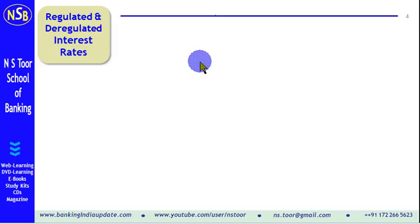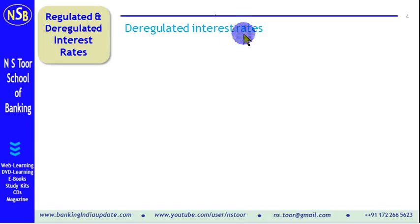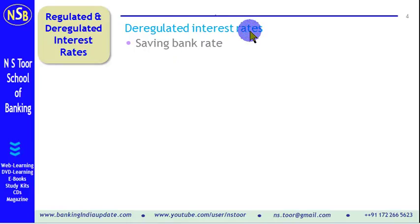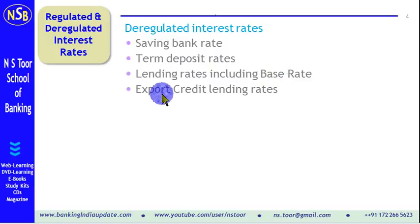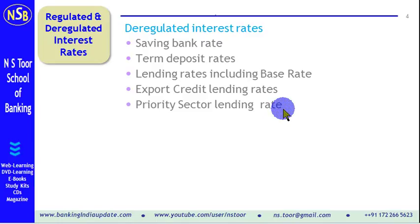Now, regulated interest rates versus deregulated interest rates: deregulated interest rates means the interest rates which banks themselves can fix, while regulated interest rate means they are fixed either by RBI or by the government. Regulated interest rates include saving bank rate, term deposit rates, lending rates including base rate that is MCLR (marginal cost based lending rate), export credit lending rates, and priority sector lending rates — all fixed by Reserve Bank of India.